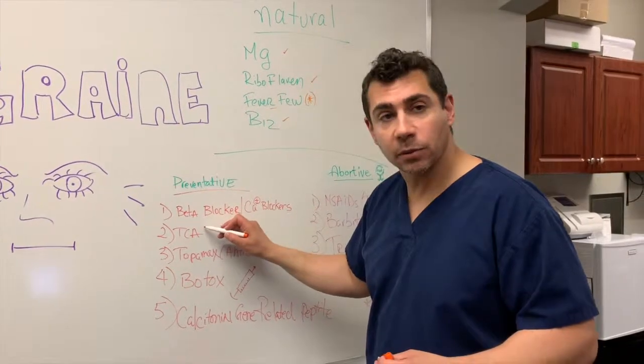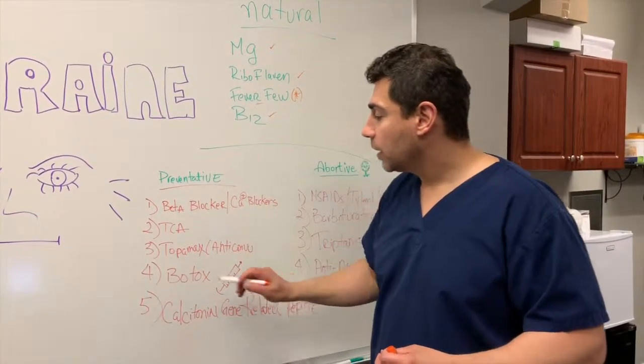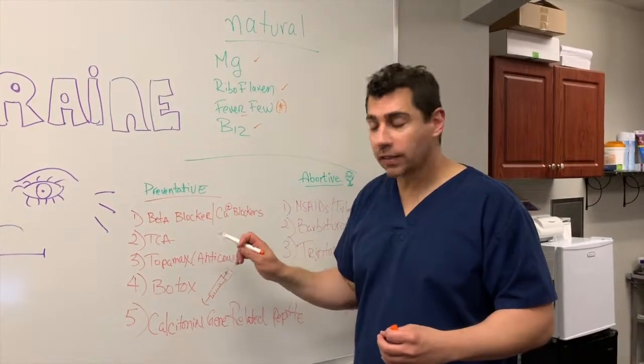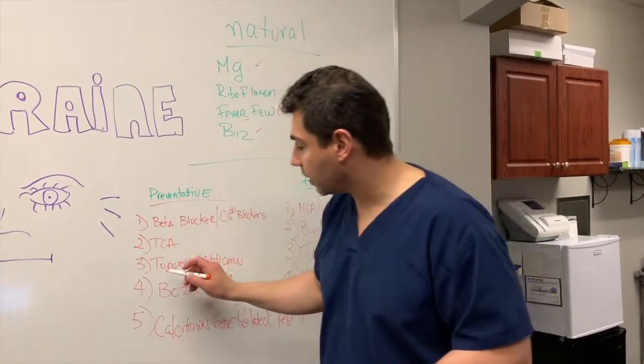Beta blockers and calcium channel blockers are hypertensive medication that can help with reducing your migraines. TCA are tricyclic antidepressants, an alternative, and Topamax, an anticonvulsant. And there's also alternative anticonvulsants that can be used here, but this is an FDA approved treatment.